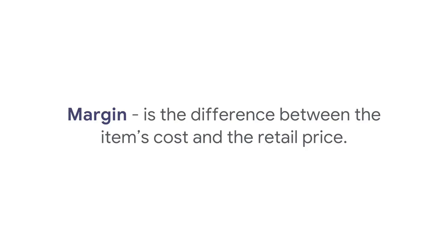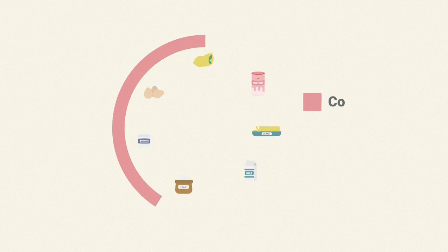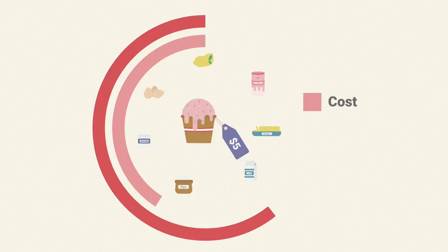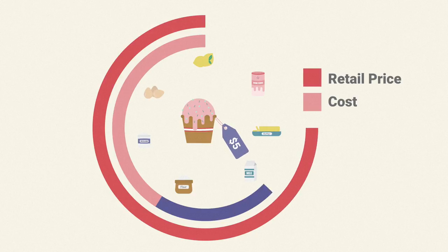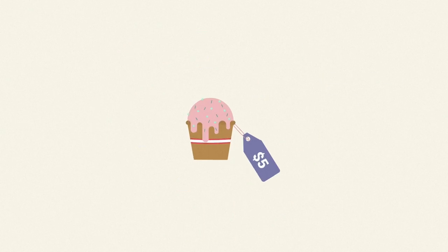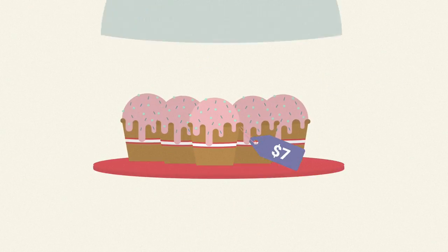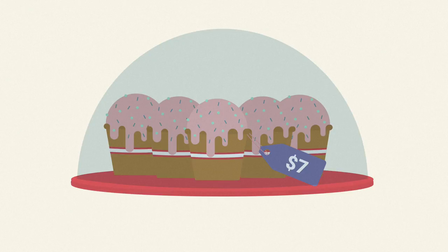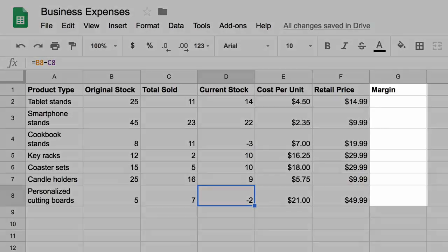Use an equivalent formula to determine the margin for each item. The margin is the difference between the item's cost and the retail price. A high profit margin indicates a big difference between your cost and the retail price, which means you're charging customers fairly and making your products cost effective. A low profit margin, with a small difference between your cost and the retail price, is a signal to re-evaluate your expenses or what you charge customers.